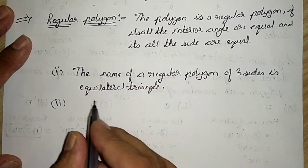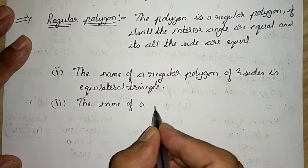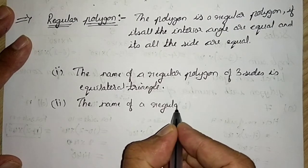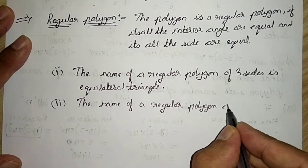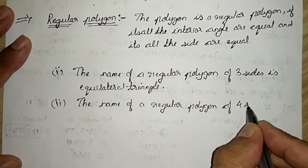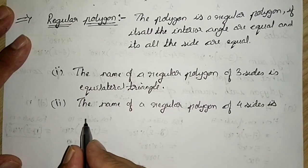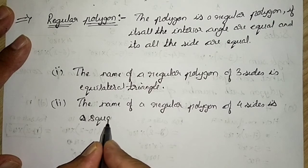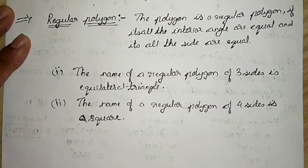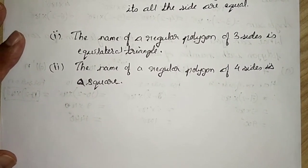Second, the name of a regular polygon of four sides is a square. A square has all its sides equal and all its angles measure 90 degrees.